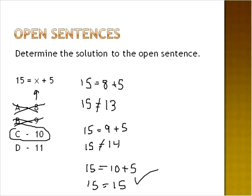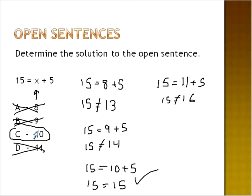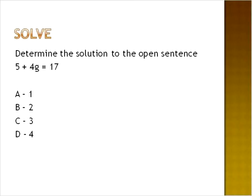We can check the final answer: fifteen is equal to eleven plus five — fifteen is equal to sixteen. No, that's not true, so we can cancel that one out, just to confirm our work was correct. With open sentences, you take each of the solutions and put it into the equation to find the one that is correct.